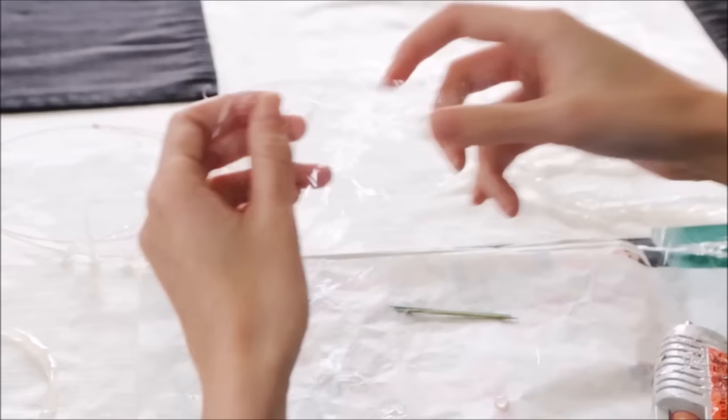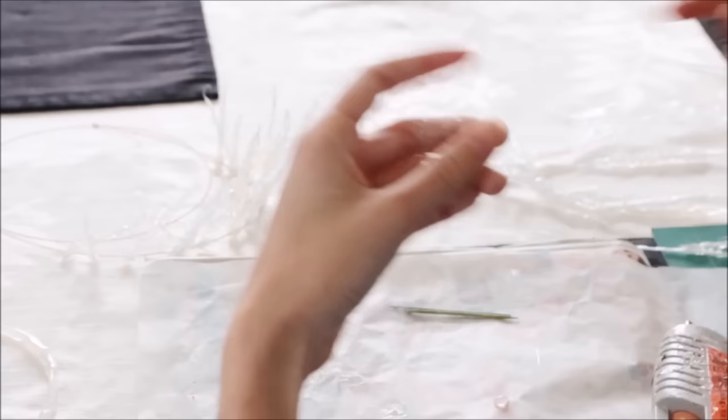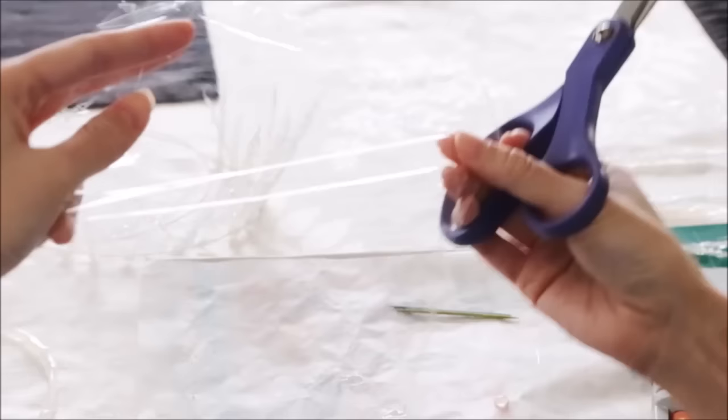The plastic wrap will form the core of your icicle, so it's actually better to use more than you need. The more you use, the firmer and straighter your core will be. I'm actually going to make small icicles here, just a couple inches long and quite thin, so I'm going to use even less than this.